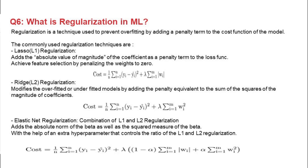The second is Ridge, also known as L2 regularization. The difference between Ridge and Lasso is that here we add the sum of squares of the magnitude of the coefficients. The third is Elastic Net, which is a combination of L1 and L2 regularization. In Elastic Net, we introduce both L1 and L2, and we also have a hyperparameter that controls the ratio between them.